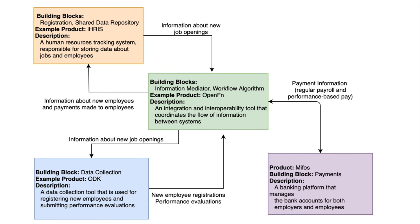This diagram shows how the different building blocks work together to form a complete employee registration and payment system. When a new job is created in IRIS, that information is sent to OpenFunction. OpenFunction then sends the appropriate messages to ODK, updating the employee registration form so the new job can be listed and filled. A remote worker can access the registration form in ODK and register a new employee. OpenFunction receives that data collection form and creates the appropriate employee records in IRIS. On a weekly basis, OpenFunction queries IRIS to get a list of employees that should be paid, payroll records are created, and the payroll information is sent to MIFOS. The payments arrive in employee bank accounts and OpenFunction marks the payroll transactions as completed.